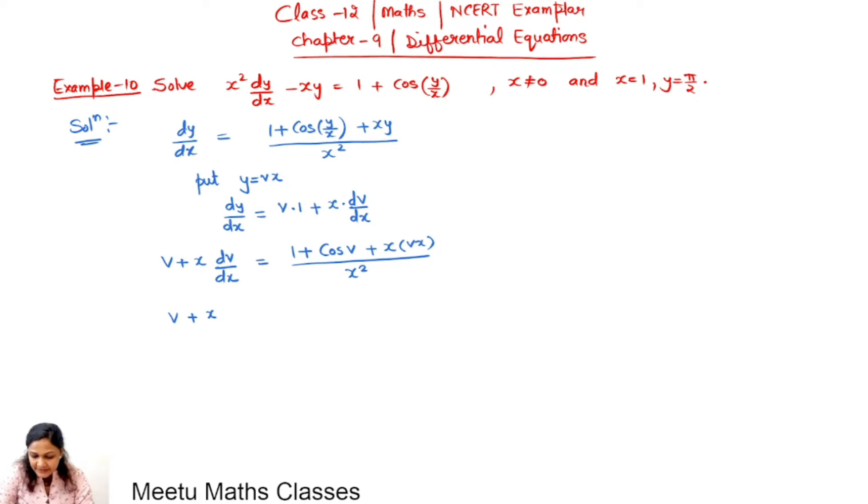So v plus x dv by dx can be written as 1 plus cos v. You can use a half angle formula. Using 1 plus cos 2a can be replaced by 2 cos square a. So using this formula we can replace this by 2 cos square v by 2 plus upon x square.